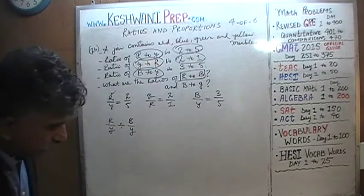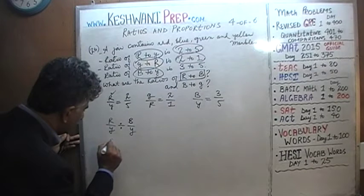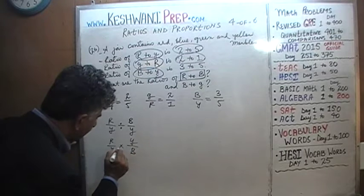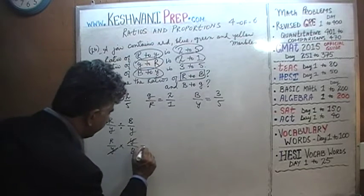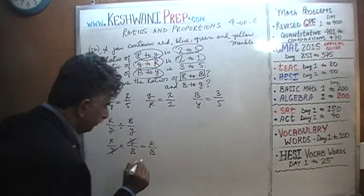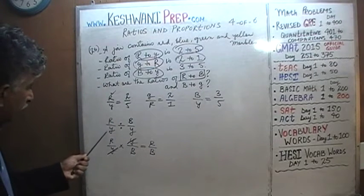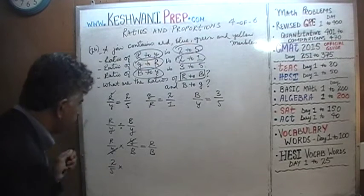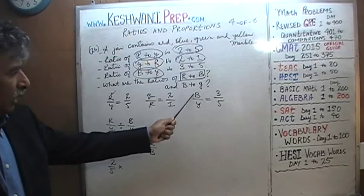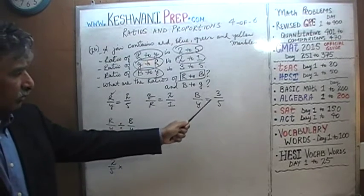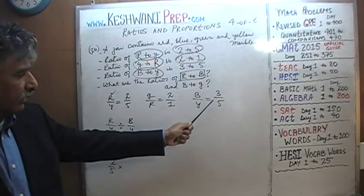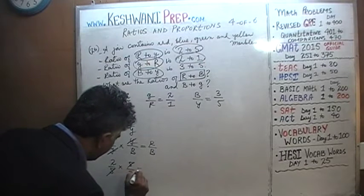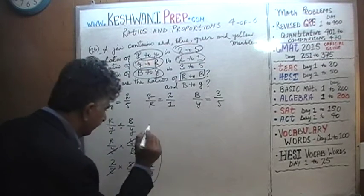If we divide the two ratios, we take red-to-yellow and multiply by the reciprocal of blue-to-yellow — that is, yellow-over-blue. The yellows cancel and we end up with red to blue. So: red to yellow is 2 to 5, times the reciprocal of blue to yellow: 3/5 becomes 5/3. The fives cancel and the answer is 2 to 3. The ratio of red to blue is 2 to 3.